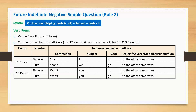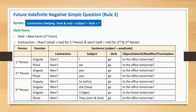Second person singular: 'Won't you go to the office tomorrow?' Second person plural: 'Won't you go to the office tomorrow?' Third person singular: 'Won't he go to the office tomorrow?' With a noun: 'Won't John go to the office tomorrow?' 'Won't she go to the office tomorrow?' — also: 'Won't Zara go to the office tomorrow?' 'Won't it go to the office tomorrow?' — referring to a tiger: 'Won't tiger go to the forest tomorrow?' Third person plural: 'Won't they go to the office tomorrow?' With names: 'Won't John and Zara go to the office tomorrow?'